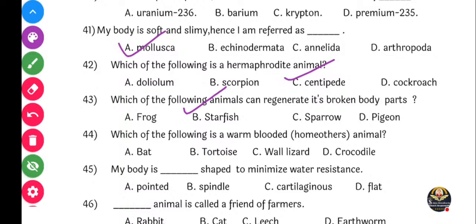Next question: Which of the following is a warm-blooded animal? Warm-blooded animals manje surrounding cha temperature sobat kiwa environment cha temperature sobat svatala constant hio shakta. Options: Bat, tortoise, world lizard, or crocodile. Yes, bat - bat karan bat Mammalia madhe yata, ani Mammalia wale sagay siya warm-blooded ahe. Baakhi sagay reptiles wale yata.